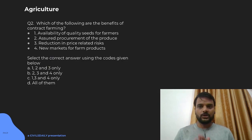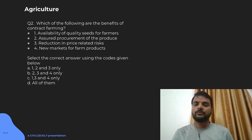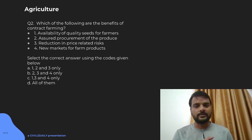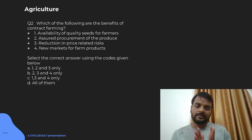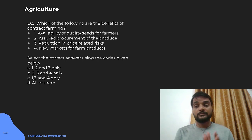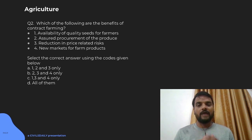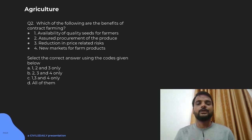Moving on to the next question on agriculture, which has been very much in the news in the recent year. The question is: which of the following are the benefits of contract farming? The basic concept of contract farming is that there will be a farmer or a group of farmers who enter into an agreement with a corporate. The corporate will give quality seeds and in return the farmer gives quality produce at a predetermined price at the end of production. That is basically contract farming.